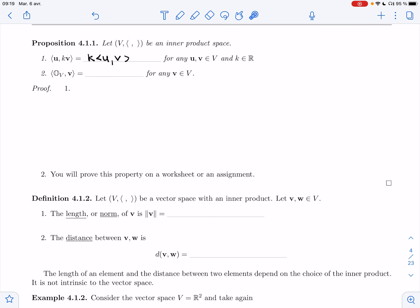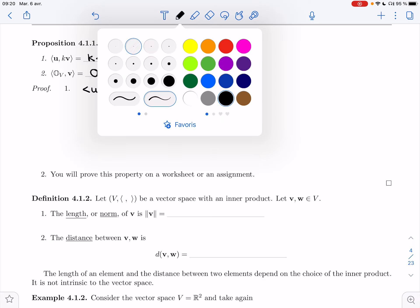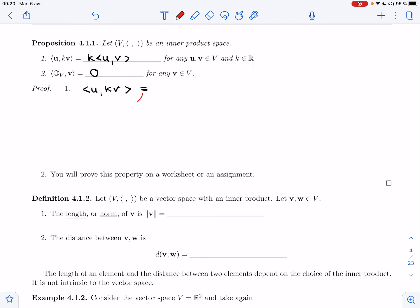And then the second property I want to prove is that if I take a dot product with a zero element, I get zero. Let's prove the first one. This is one of those cases where you have to go by the axioms, so you go slowly.